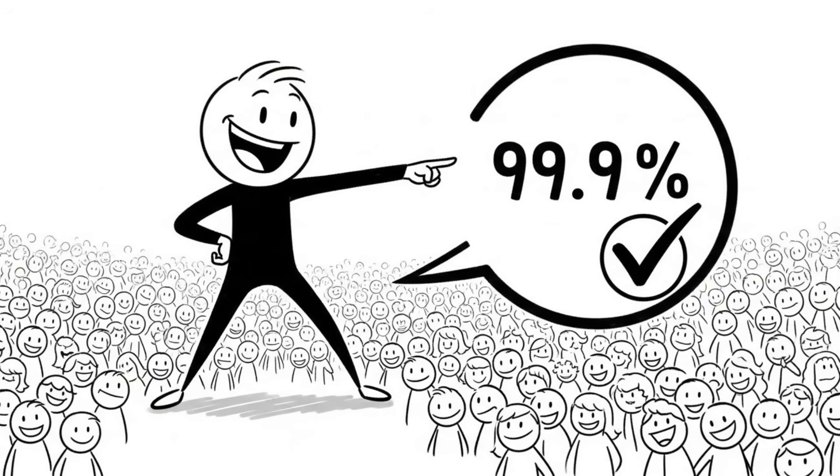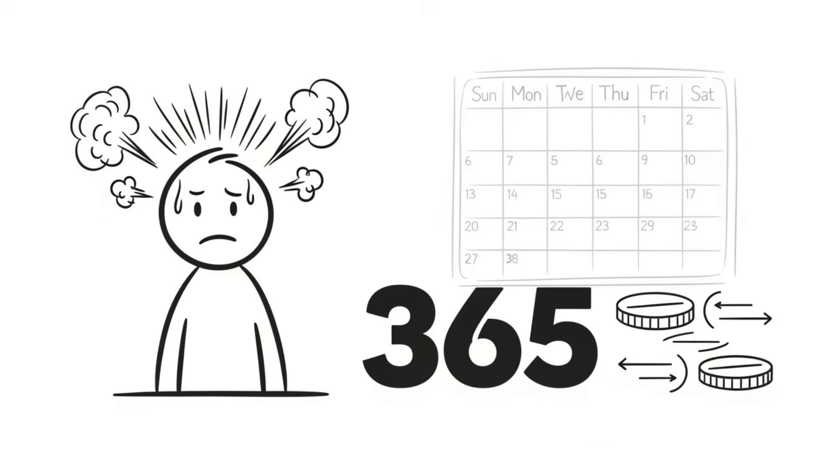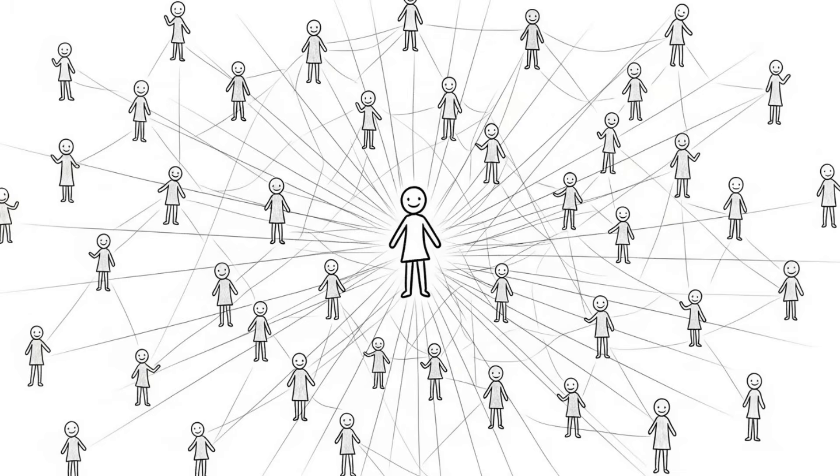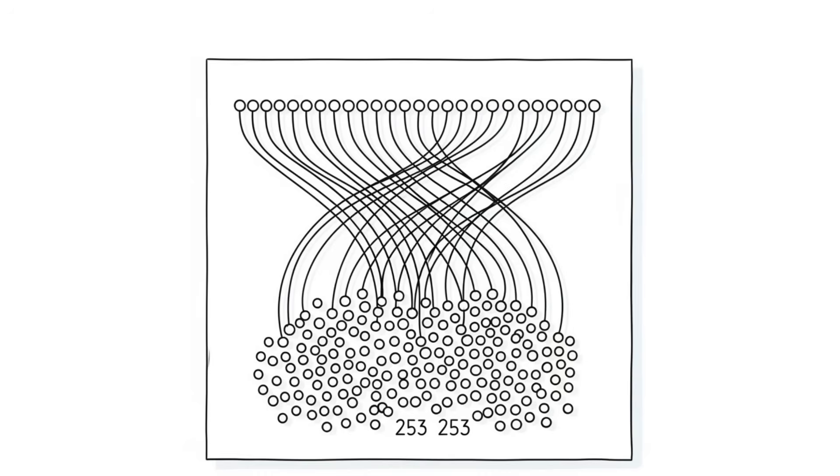Bring this up to 75 people, and that likelihood is almost guaranteed at 99.9%. Your brain is going haywire thinking this can't be right because there are 365 days in a year, so logically you'd need at least half that many people for a coin flip odds. But it's not about matching your birthday to everyone else's. It's about every possible pairing in the room. 23 people create 253 unique comparisons, and that density of connections is where math brings clarity.